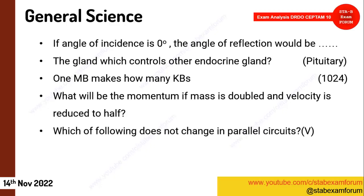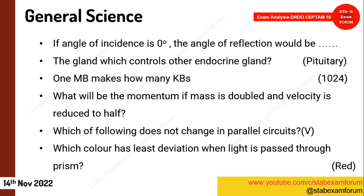Which of the following does not change in a parallel circuit — students know the answer. General Science was lucky for today's candidates. From dispersion of light: when light passes through a prism, which color has the least deviation? The answer is red.